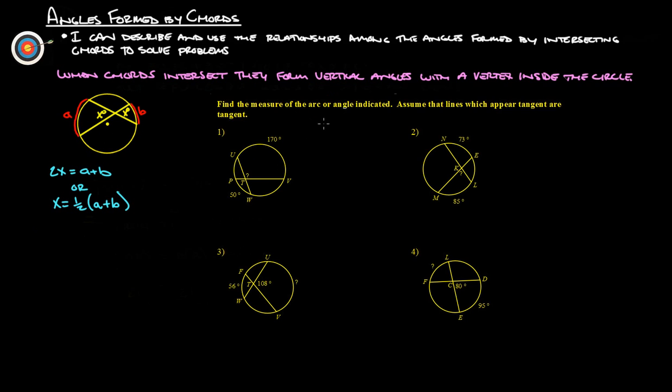So, find the measure of the arc or angle indicated. Assume that lines which appear tangent are tangent. I don't think there's any tangent lines in here anywhere. Anyway, so these two angles here are going to be equal, they're going to be vertical angles, so it'll be the same, and it's going to be the average of 170 plus 50.